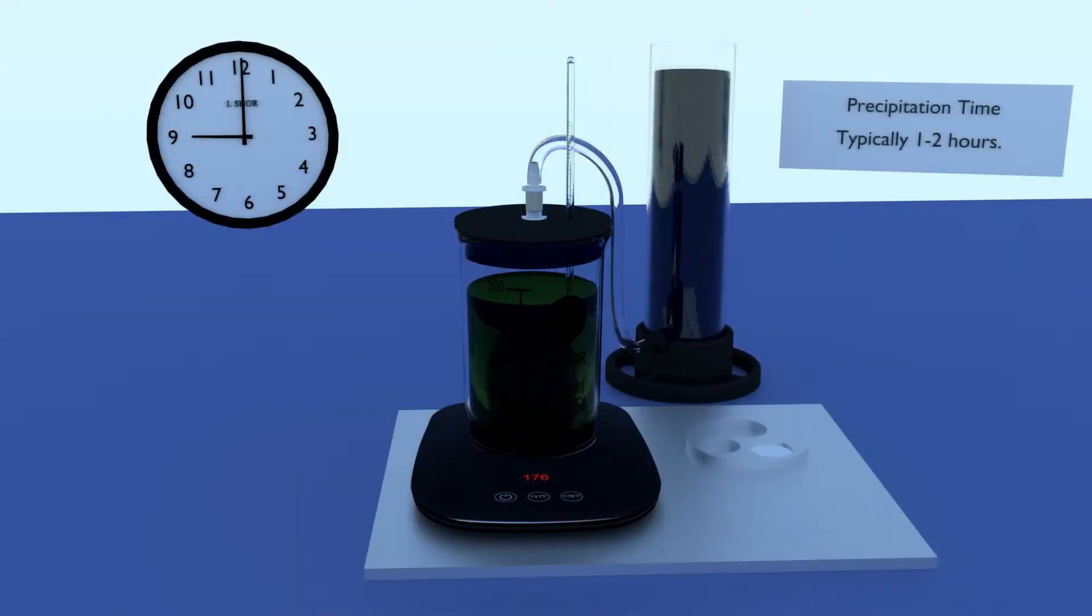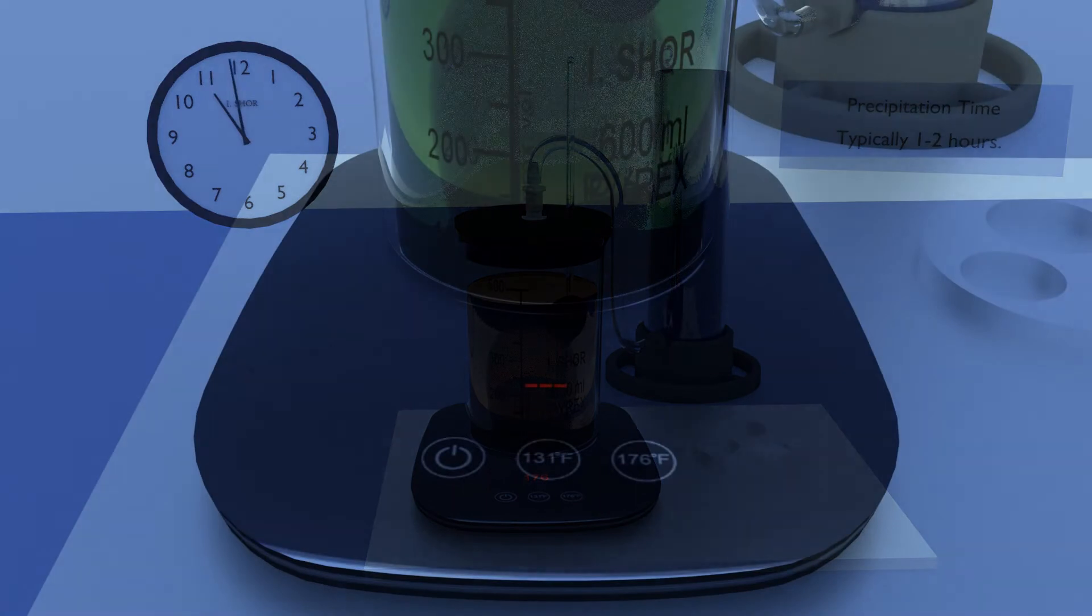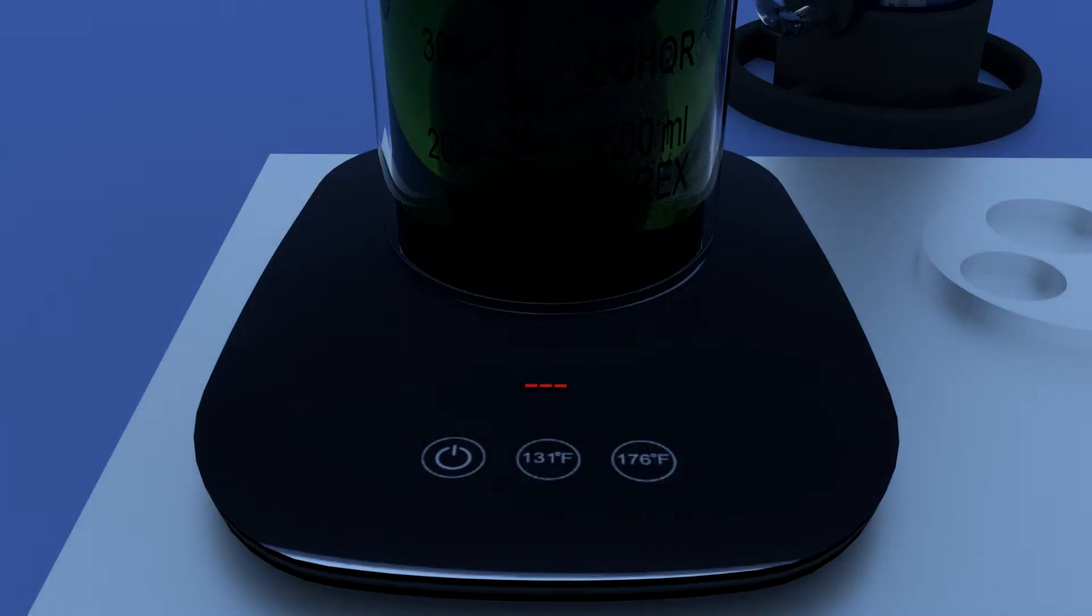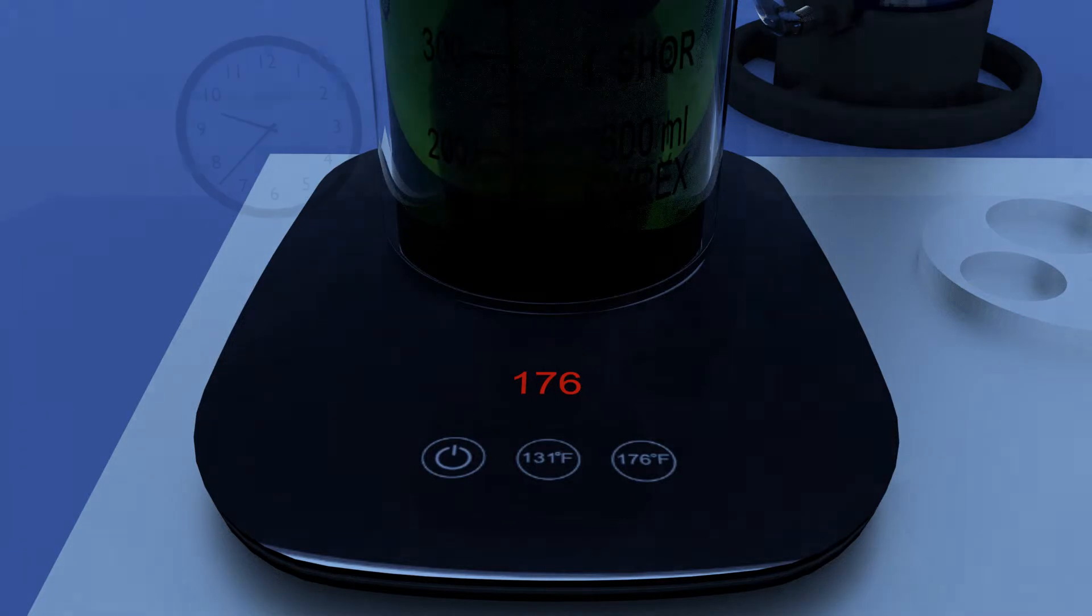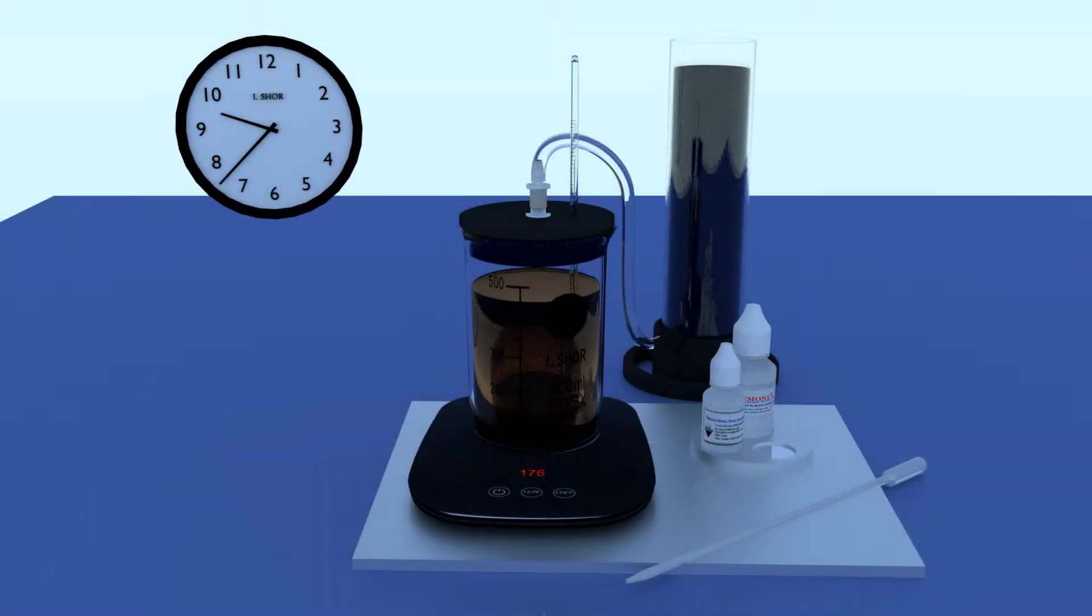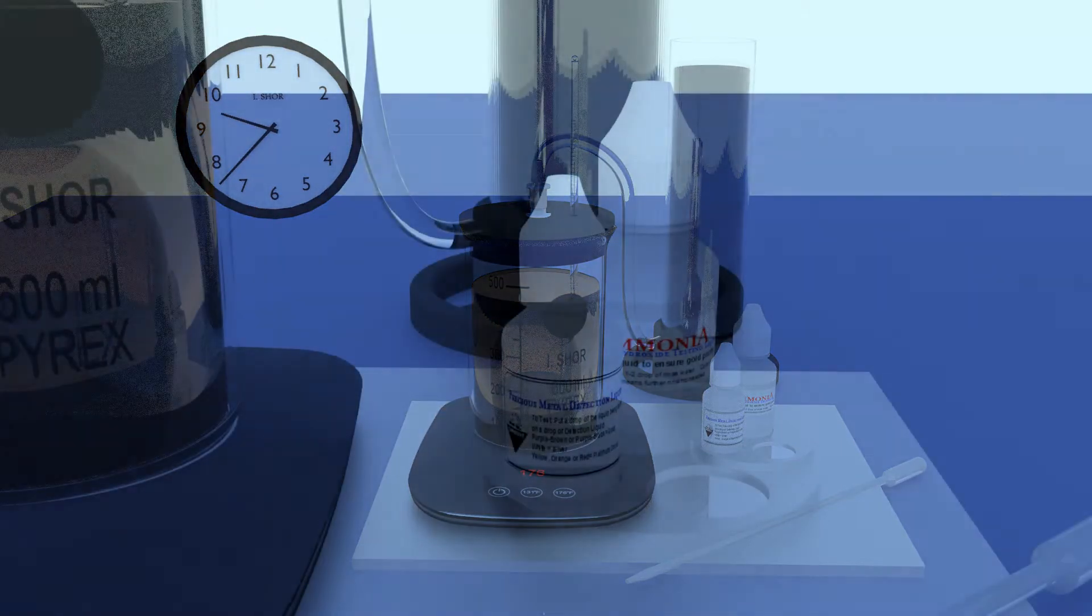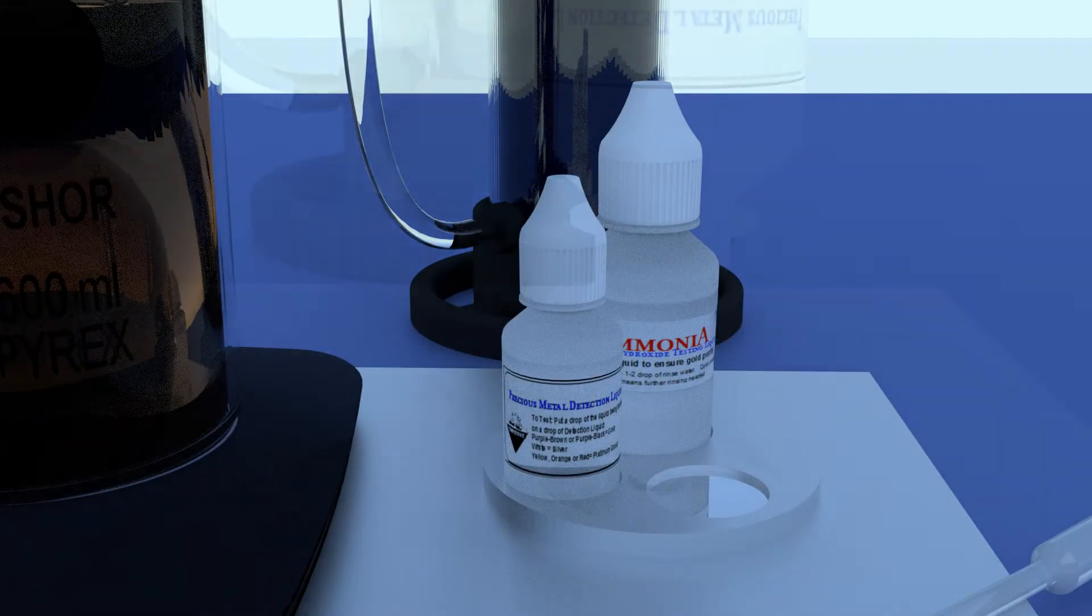Typical precipitation time is about one to two hours, but if it's more convenient to leave it longer, that's fine. The hot plate will automatically turn off if left running for a long period of time. No worries, just tap the on button to restore heat. So how will we know when precipitation is finished? The precious metal detection test will tell us.